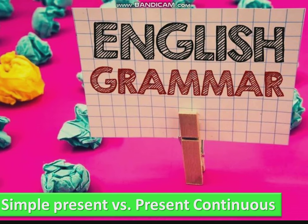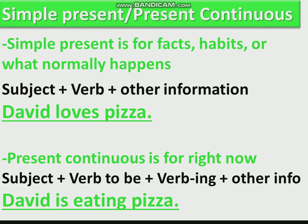Simple present versus present continuous. I talked to you about this last week, so I'll go fast — just a review. Simple present is for facts, habits, or what normally happens. For example: 'David loves pizza' — this is a fact. Present continuous is for right now. For example: 'David is eating pizza' — this is about right now.